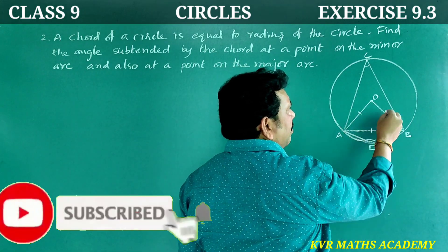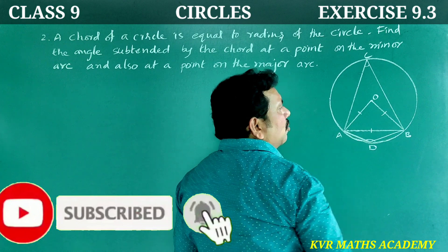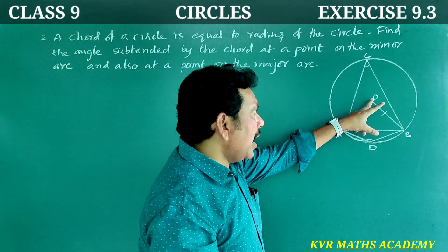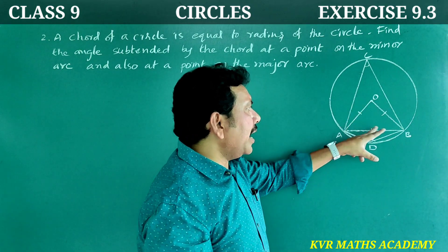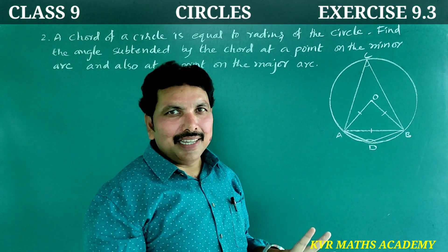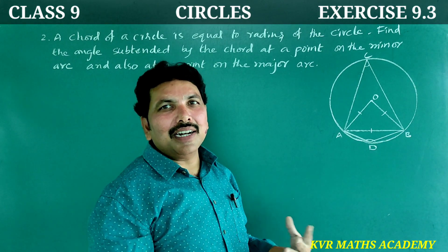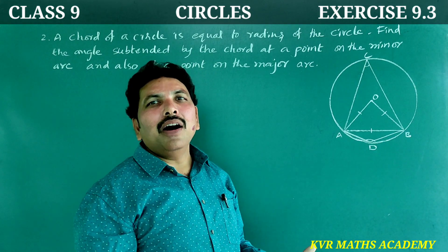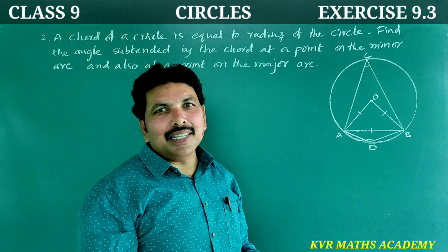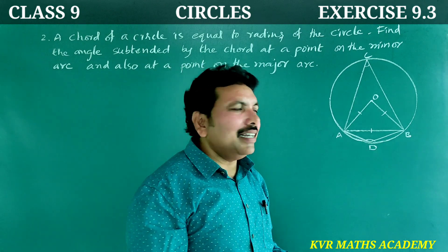Since OA is equal to AB and also OB, triangle OAB is an equilateral triangle. All the angles are equal to 60 degrees.